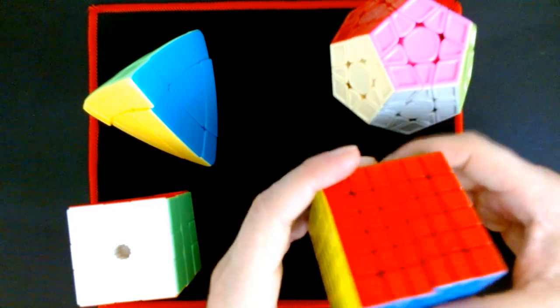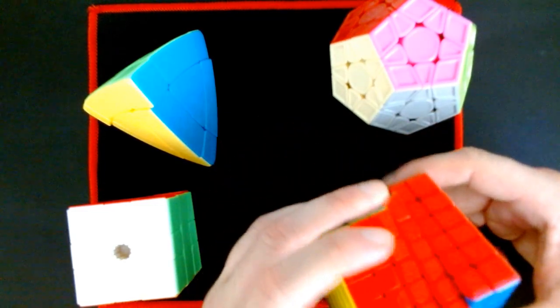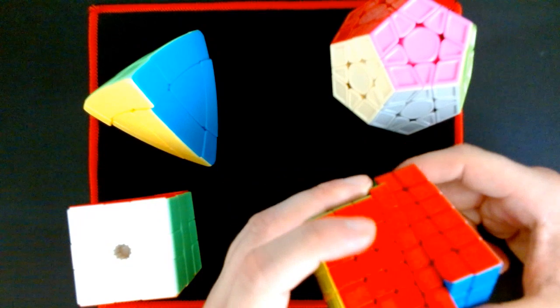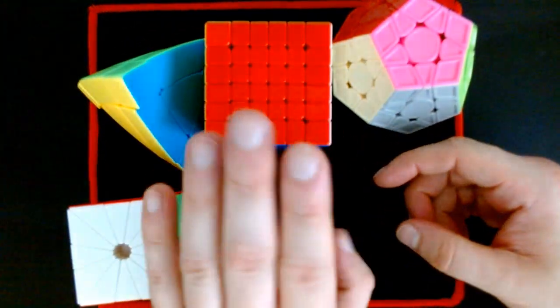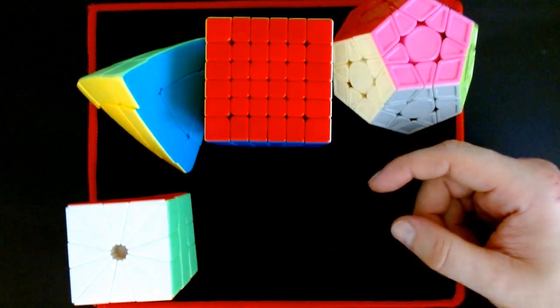I don't know what it is. I remember the first six by six I had, it was a V-Cube 6, it was a white one and it broke. So I bought another one, but I've got so many six by sixes. So there may be a marathon in the works, who knows.